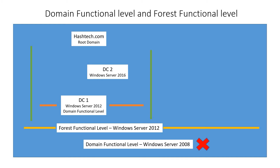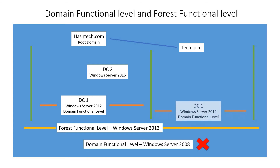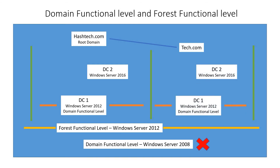If you take hashtag.com as the root domain in the organization, you might have another domain like tech.com with the same scenario. The forest functional level within that forest defines the lowest level the domain functional level can work. It doesn't depend on the domain name — all domains in that forest need to be functioning above the forest functional level.